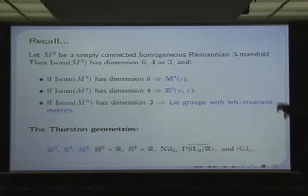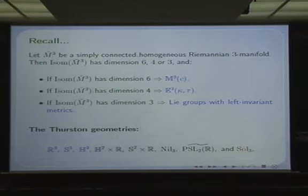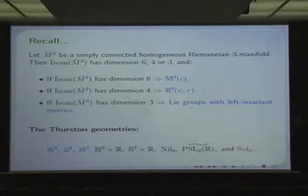In the case that the dimension is six, you have a space of constant curvature — one of the space forms: the sphere, Euclidean space, or hyperbolic space. In the case that you have dimension four, you are working on one of these E(κ,τ) spaces that we have been developing theory for during all these lectures: Heisenberg, H²×ℝ, S²×ℝ, PSL(2,ℝ), Berger spheres. And finally, in the case that you have an isometry group of dimension three, the resulting manifolds can be classified, but the classification is much more technical — you have many more cases.